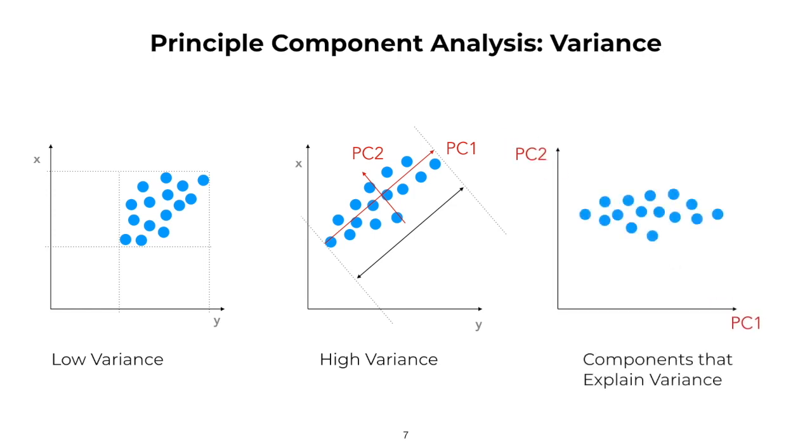When we select the principal components that explain the most variance of our data, we can project all of our samples into this space and visualize the full dataset. This technique is called principal component analysis, and it can be very helpful in the initial stages of our analysis.